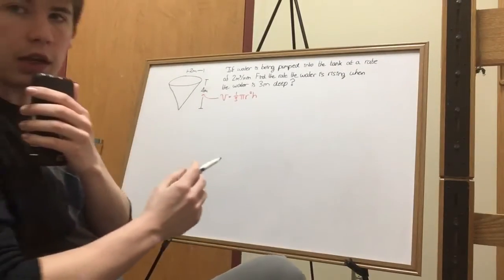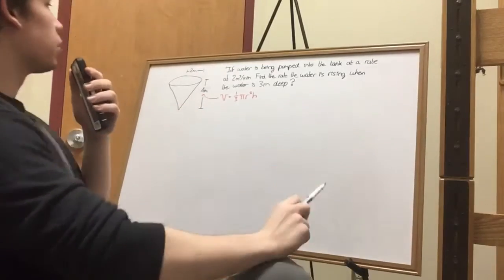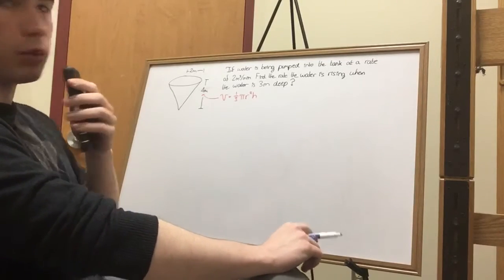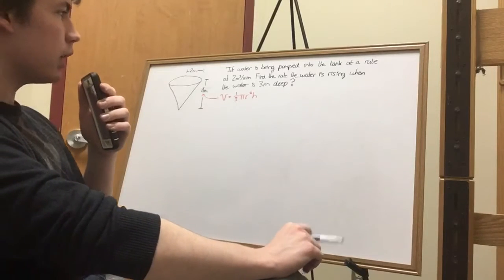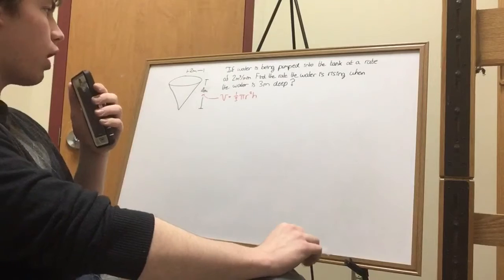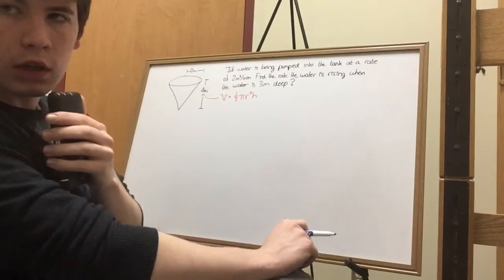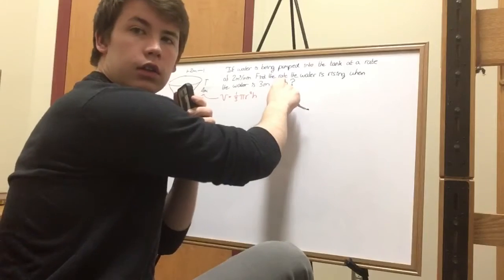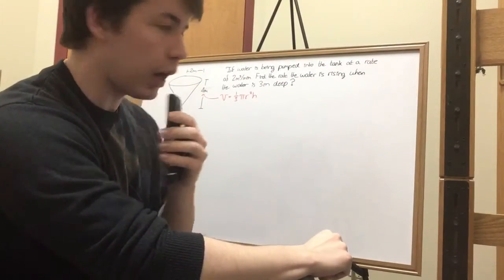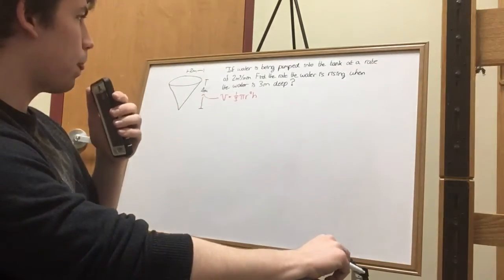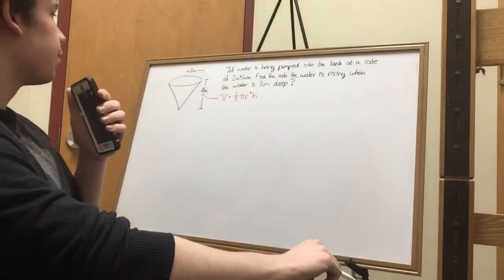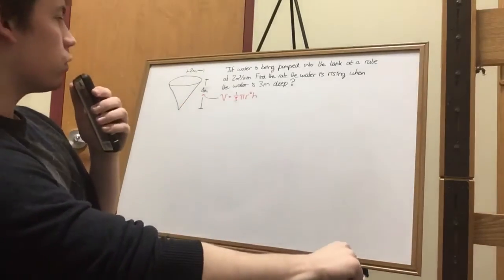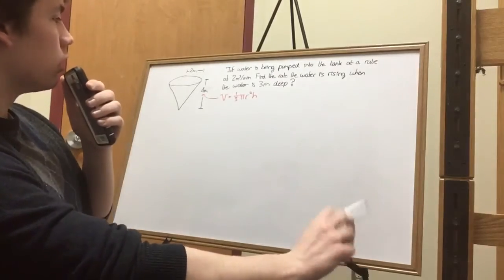So we have ourselves a tank right there. Water is being pumped into the tank at a rate of 2 meters cubed per minute. And what we need to find is the rate that the water is rising when the water is at a depth of 3 meters. I have already went ahead and wrote down the equation for this tank: Volume equals one-third pi r squared times the height of the container.